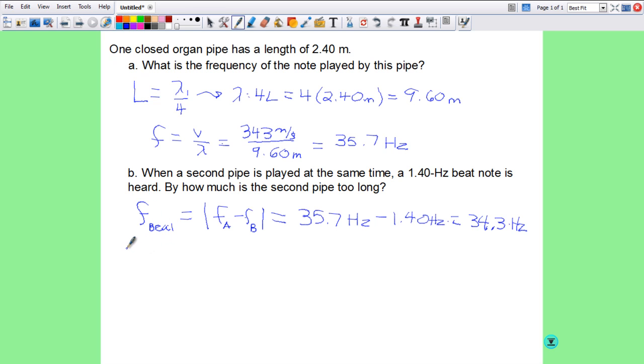Okay, so now that we have that frequency, we need to find our new lambda. So lambda using our velocity equals lambda F equation, solving for lambda, velocity over frequency. Velocity is still the same, 343 meters per second divided by our new frequency, which is 34.3 hertz. And this gives us a wavelength of 10.0 meters, slightly larger than the first one.